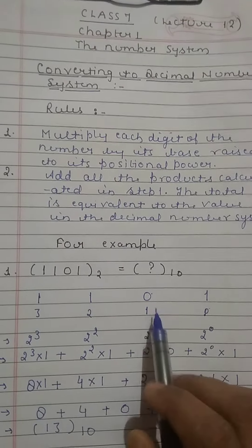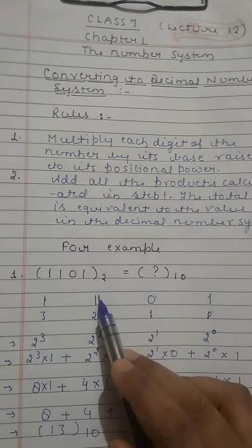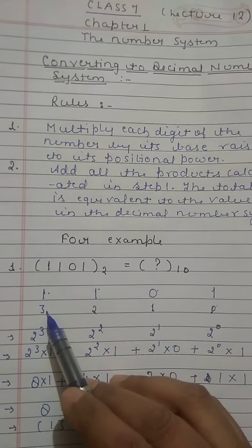1 will be at position 0, 0 will be at first position, this one will be at second position, and this one will be at third position.